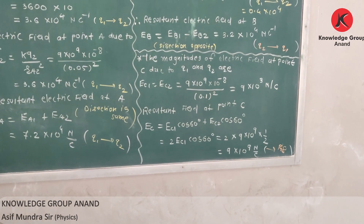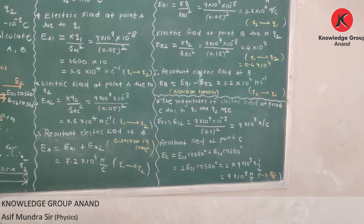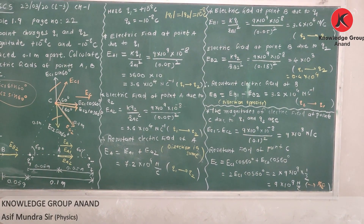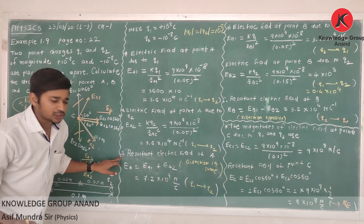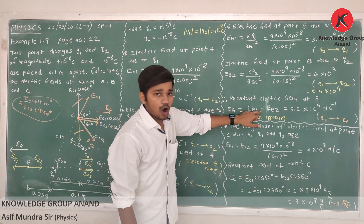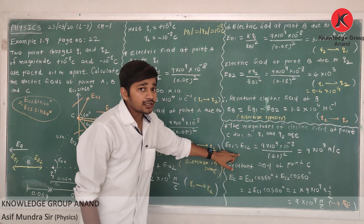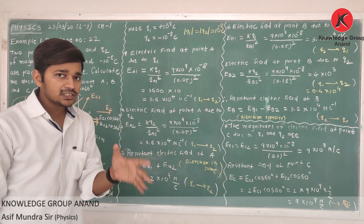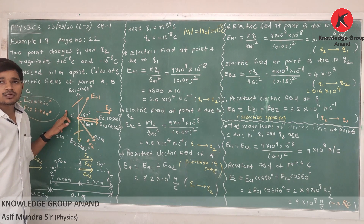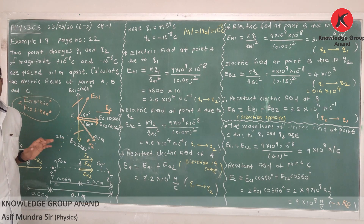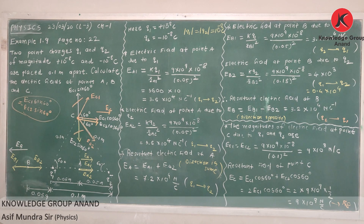So this is one best example of vector addition. How to add vectors: in the first case, two electric fields are in the same direction, so we add them. In the second case, two electric fields are in opposite directions, so we subtract. In the third case, they are neither in the same nor in opposite directions, so you resolve the vectors into mutually perpendicular components. Write this down in your notebook. Thank you.